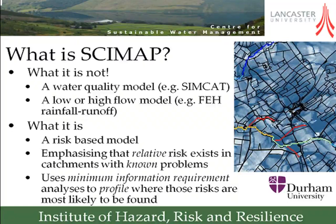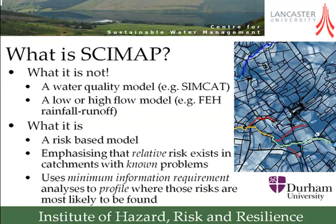As with all models, the only thing you can really do with a model is show that it's wrong. But what Scimap aims to do is to show you where to look first, knowing that because of the simplifications and assumptions in it, it will inevitably not give you a full story. But when you're dealing with very large, spatially extensive, complicated agricultural catchments, it's about saying: where do you go first? Where do you prioritize your scarce resources? Where are the risks most likely to be found?